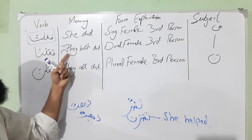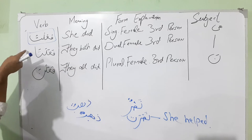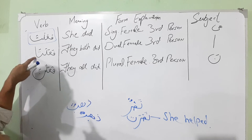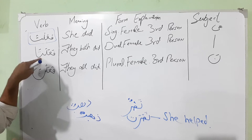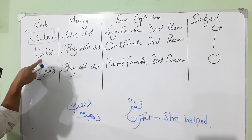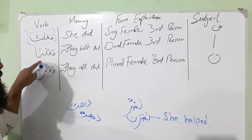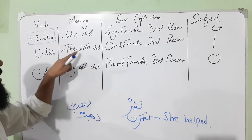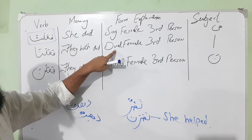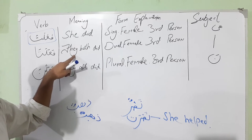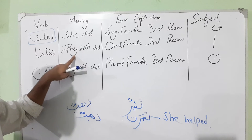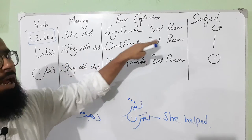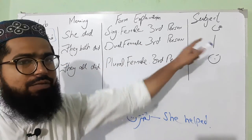Faalata means 'they both did,' and here 'they' refers to females, not males. It is dual, not plural, because the alif suffix has been added to faalat. This alif means 'two,' so 'they both did.' It is dual, female, and third person. Here the alif is the subject.